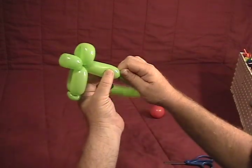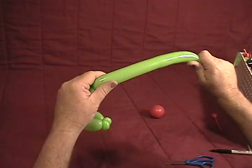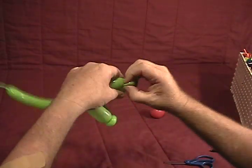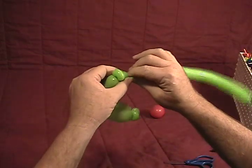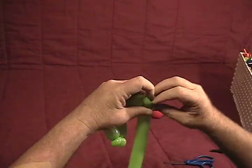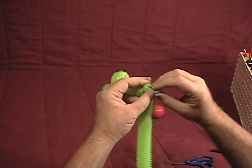Now make about a two inch bubble for his body. Make a little small half inch bubble. Make that into a pinch twist. Another small half inch bubble. Make that into a pinch twist as well. This is going to be our frog's little bottom.